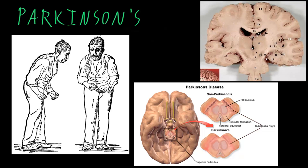Late in the course of the disease, when motor abnormalities are severe, patients may become unable to care for themselves, and may also develop abnormalities of cognitive, emotional, or autonomic functions.